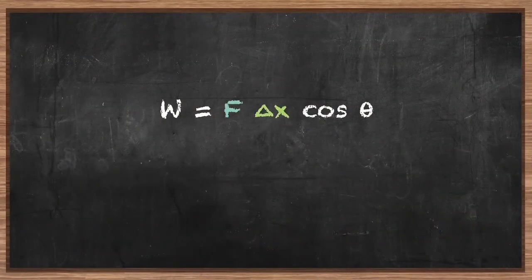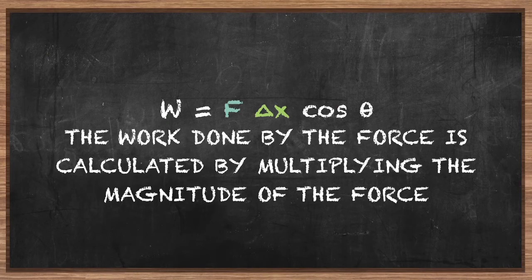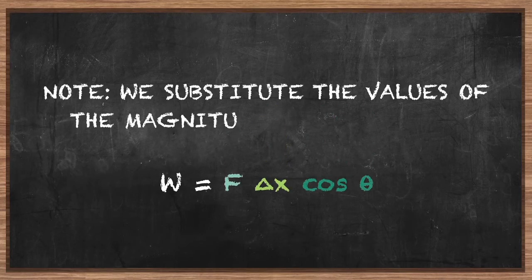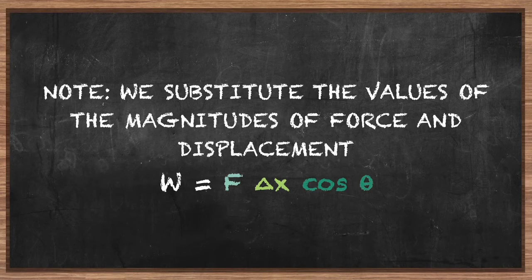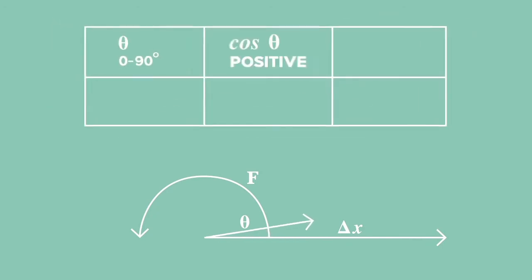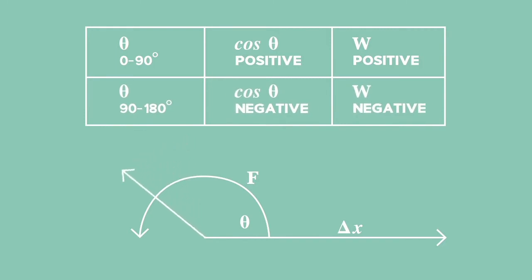When the force and displacement are at an angle to one another, the work done by the force is calculated by multiplying the magnitude of the force, the magnitude of the displacement, and the cosine of the angle between them. Note that we substitute the magnitudes of force and displacement, which are always positive. The value of theta determines whether positive or negative work is done by the force on the object.